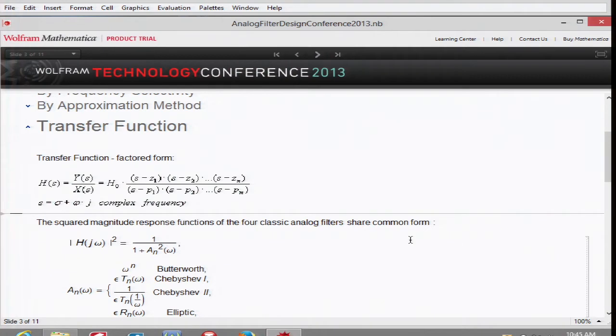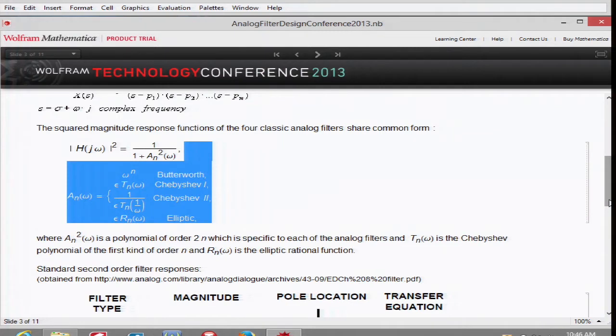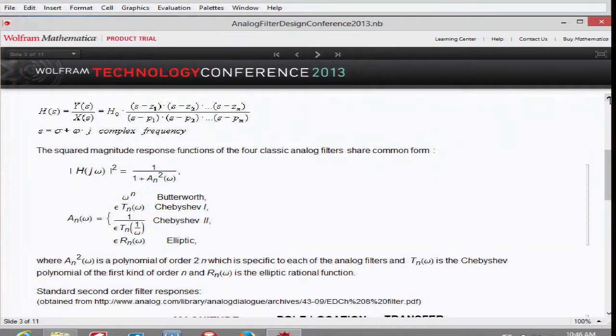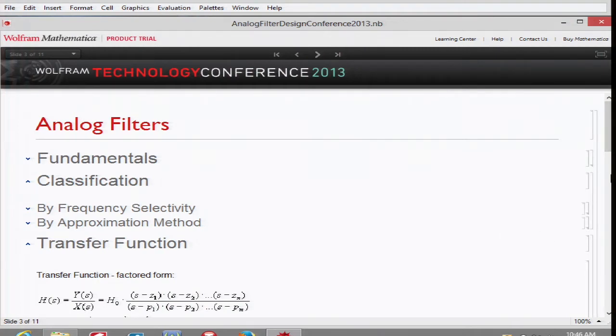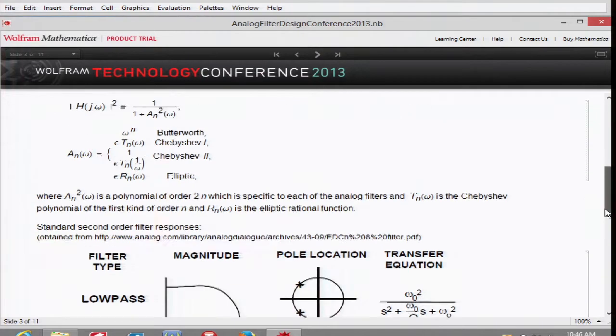The square magnitude response of all these four major types of filters are given in the following form, where a_n squared function of omega is a polynomial of omega of order 2n. It is specific to each one of these filters, where T_n is the Chebyshev polynomial of the first kind, and R_n is an elliptic rational function. The transfer function above is given in its factored form, but it could also be split into second-order sections or products of first and second-order polynomials.